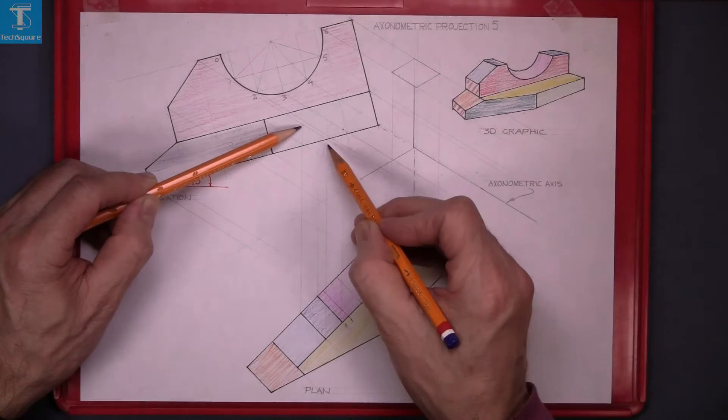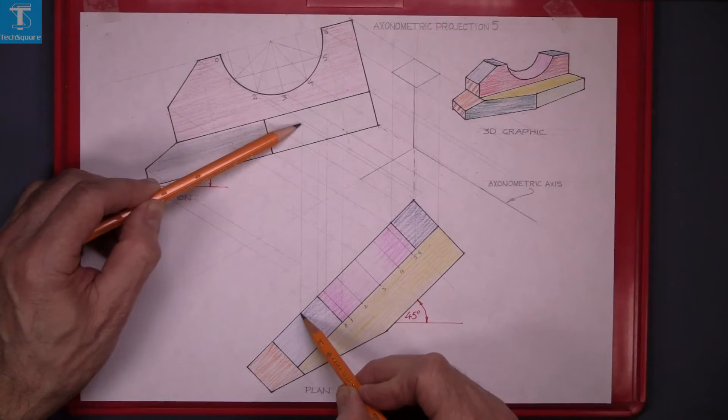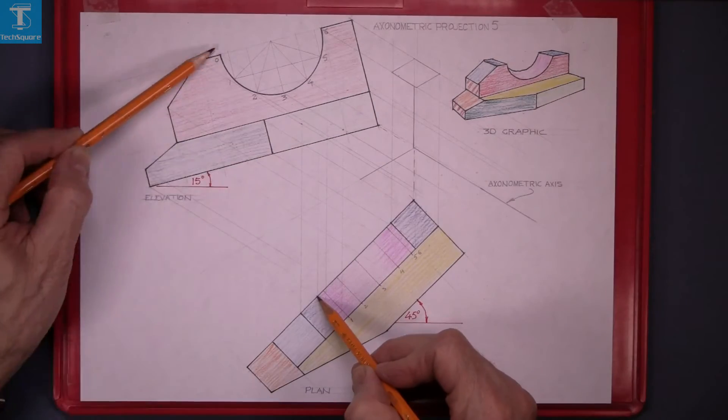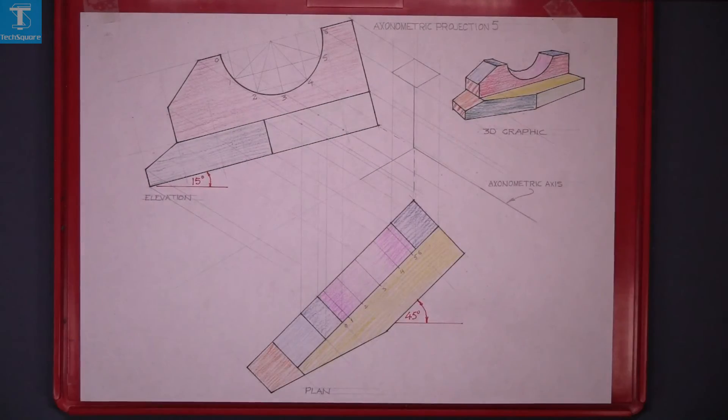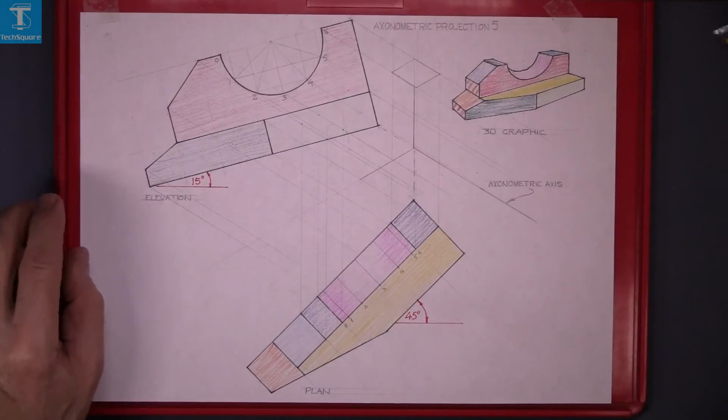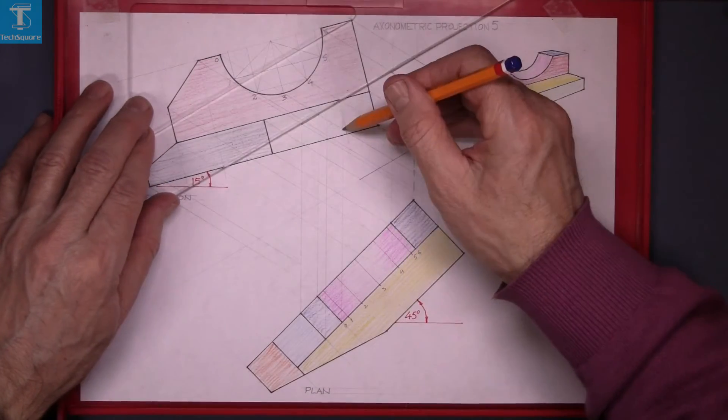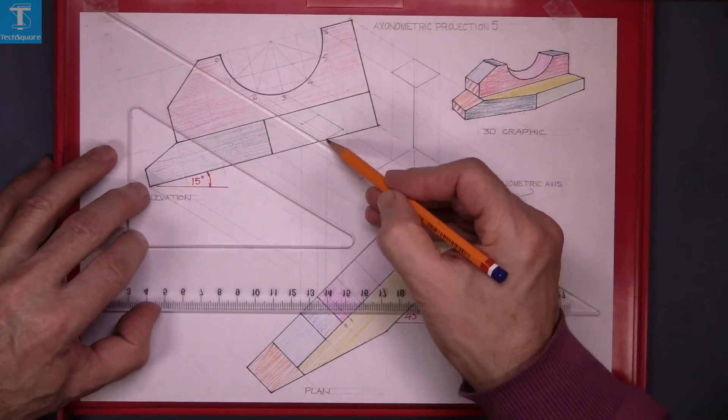That's point 1, that's 2, that's 3 and the last one there is 4. Now line in that piece. And that's the isometric of the top of that.